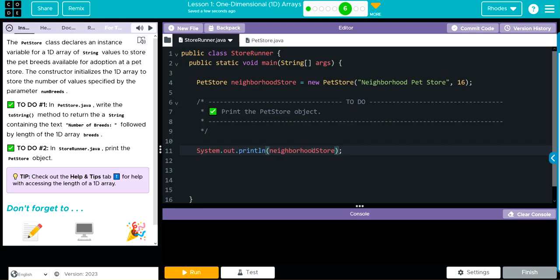When I hit run, I should get number of breeds: 16. Let's go ahead and see if we're right. Number of breeds: 16.